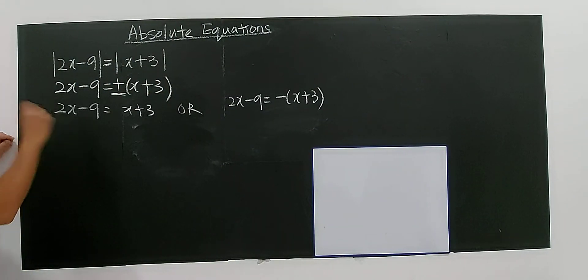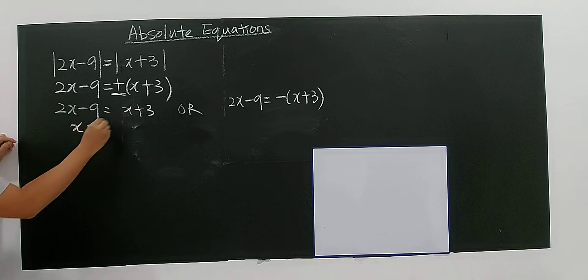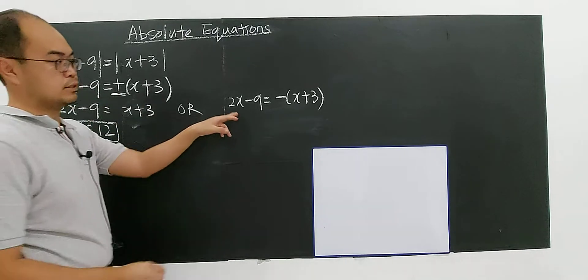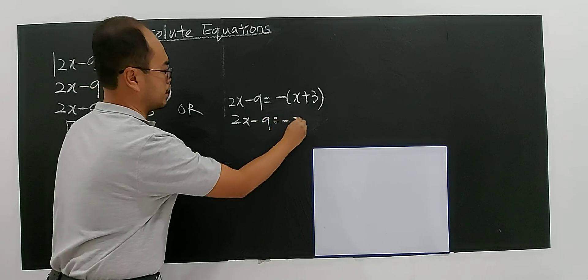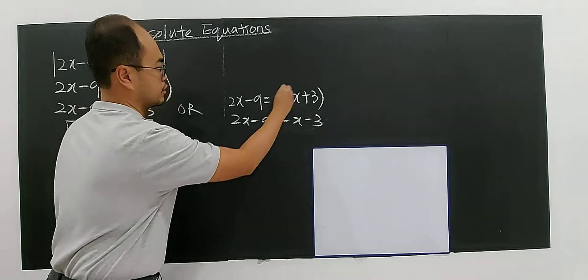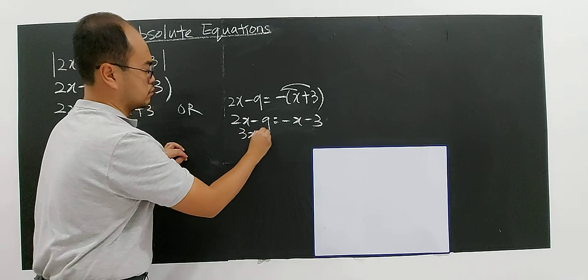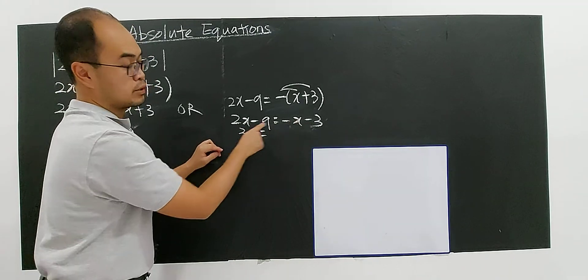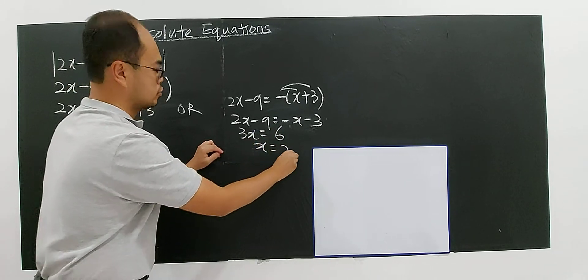For the first case: 2x minus x gives you x equals to 3 plus 9, which is 12. That's the first solution. For the second case: 2x minus 9 equals to negative x minus 3. Expanding: 3x equals to negative 3 plus 9, which is 6. So x equals to 2.